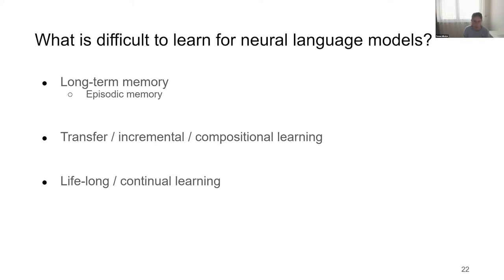Understanding and memory formation are quite related — intelligence and memory are more connected than they first appear. Memory is one thing we can study as a deficiency of neural language models. There are many related topics in the research community: transfer learning, incremental learning, compositional learning, and lifelong learning. I believe we may make progress in all these areas if we find new ideas that allow models to form more stable memory structures.